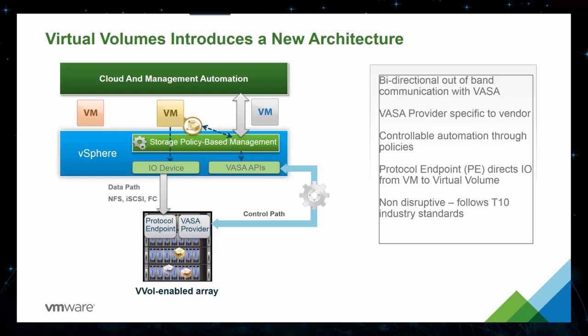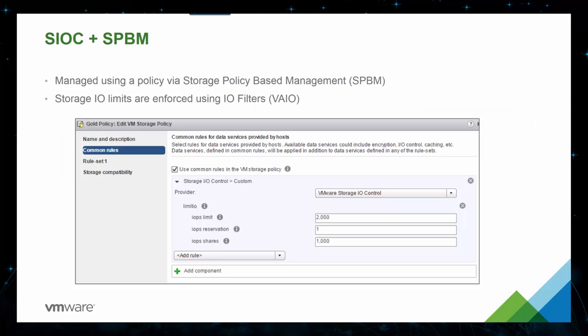VVols now has a new architecture as well, which allows you to do bidirectional out-of-band communication with your VASA. Keep in mind that each VASA provider is specific to each vendor. It allows you to control automation through policies and offers a protocol endpoint, or PE, which directs I/O from the VM to the virtual volume. For quick updates on Storage I/O Control and Storage Policy-Based Management, or SPBM — it's managed using a policy via SPBM, and Storage I/O limits are enforced using I/O Filters, or the VI I/O.